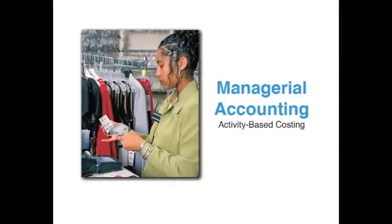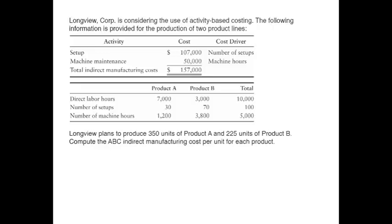We're going to be looking at two different examples so we can get some practice at performing activity-based costing. Our first example will be the Longview Corporation, and they're considering the use of activity-based costing. We have the following information provided for the production of two product lines.